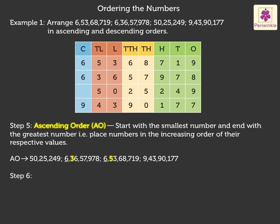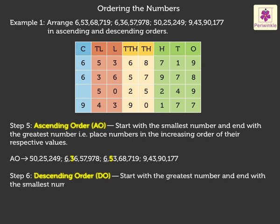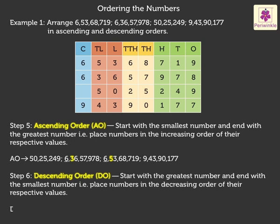Step 6. To write a set of numbers in descending order, we start with the greatest number and end with the smallest number. That is, we place numbers in the decreasing order of their respective values. The descending order is 9 crore 43,90,177, 6 crore 53,68,719, 6 crore 36,57,978, 50,25,249.